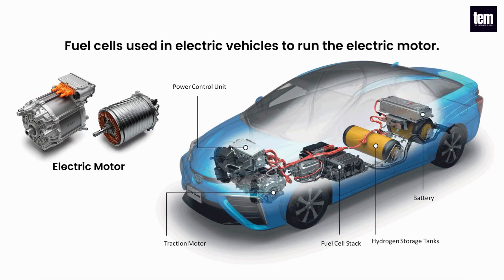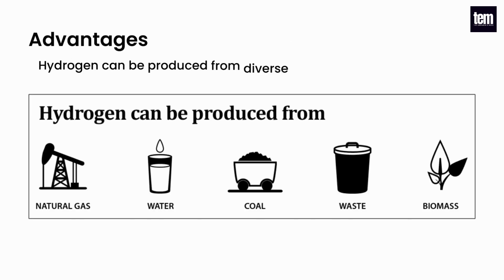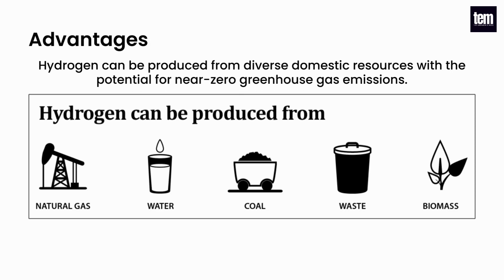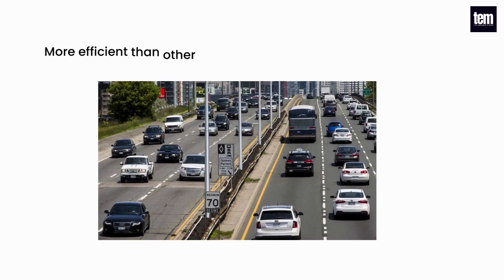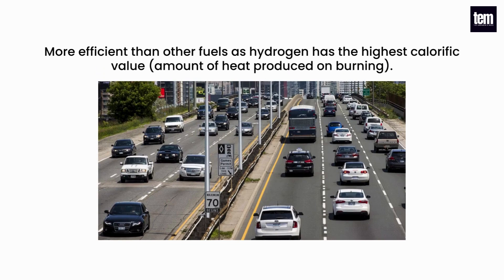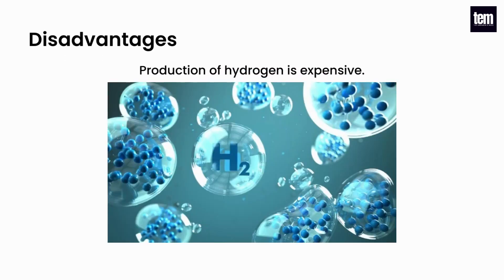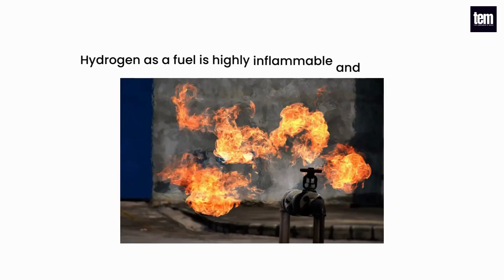Fuel cells are used in electric vehicles to run the electric motor. Advantages: hydrogen can be produced from diverse domestic resources with the potential for near-zero greenhouse gas emissions. Fuel cells have no emissions of pollutants at the point of operation. More efficient than other fuels as hydrogen has the highest calorific value. Disadvantages: production of hydrogen is expensive. Hydrogen as a fuel is highly inflammable and explosive.